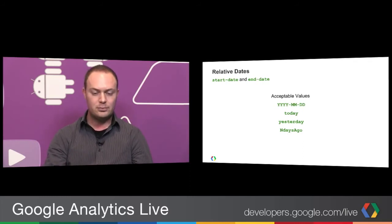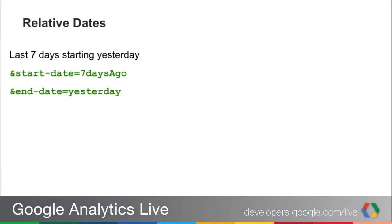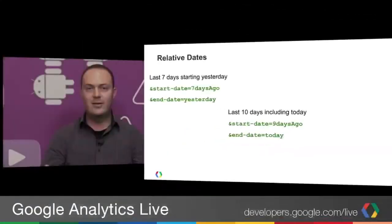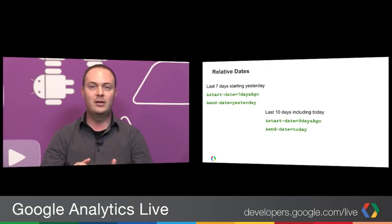For example, if you want your report to always return the last seven days, you would set the start date to 7daysAgo and the end date to yesterday, and this would always give you the last seven days no matter when you query it. For the last ten days including today, the end date would be today and the start date would be 9daysAgo. Be careful here: when including today, you might intuitively think it's 10daysAgo, but it's actually 9daysAgo to include that full ten days. Make sure you're getting the correct number of days based on the NdaysAgo parameter.